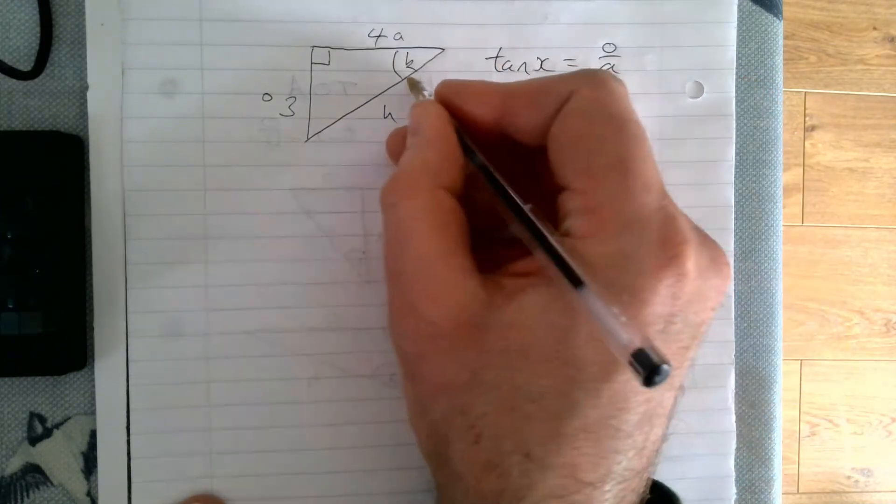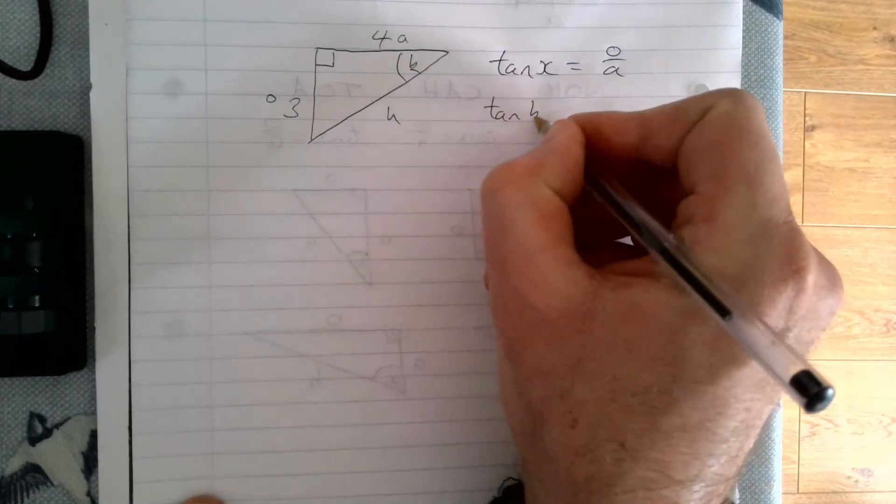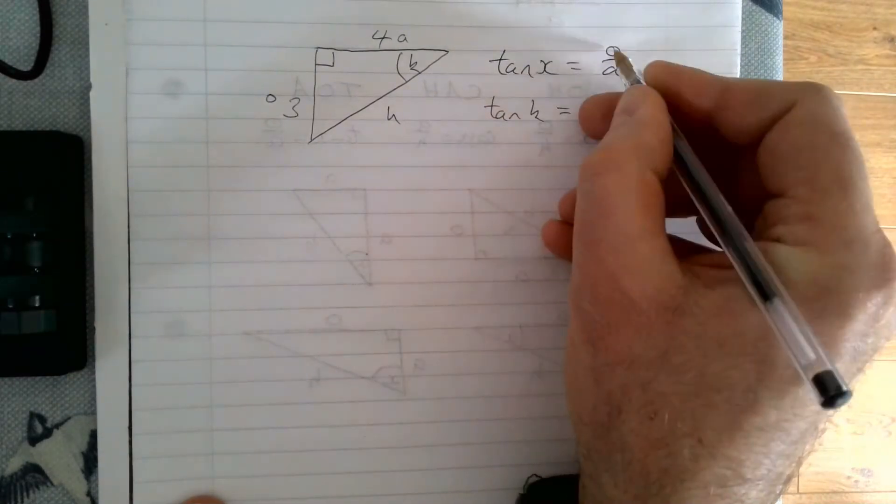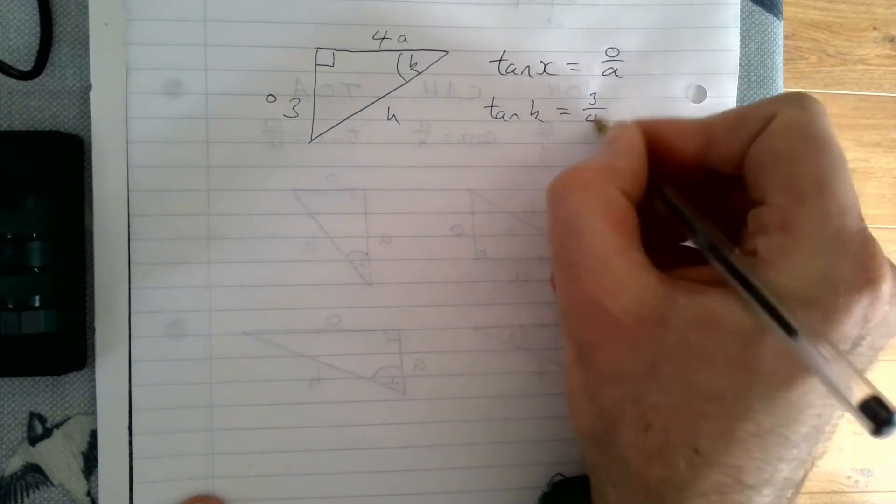Filling in our blanks, this X here represents our angle, so tan K equals 3 over 4.